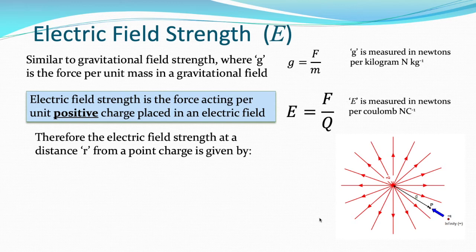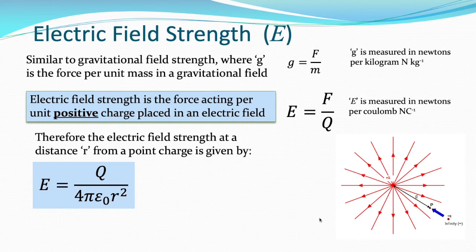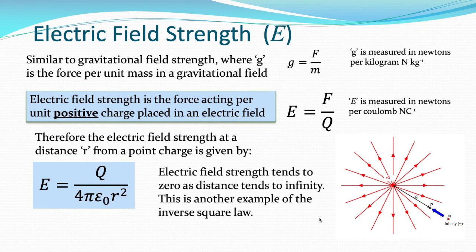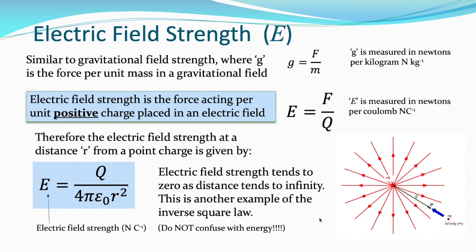The electric field strength at a distance R from a point charge is given by E equals Q over 4 pi ε₀ R squared. It's the force equation with one of the charges cancelled out, because your second charge is effectively one Coulomb — it's the force per unit charge. Electric field strength tends to zero as your distance tends to infinity. The further away you get from your charge, the smaller the field strength — another example of the inverse square law.